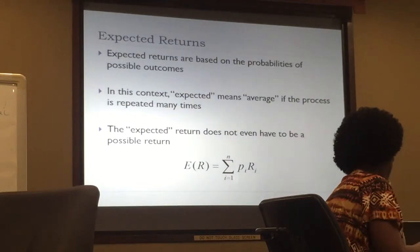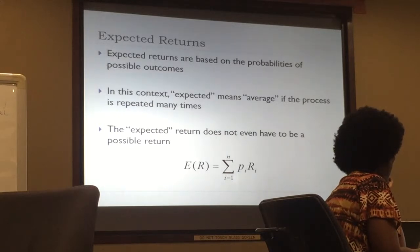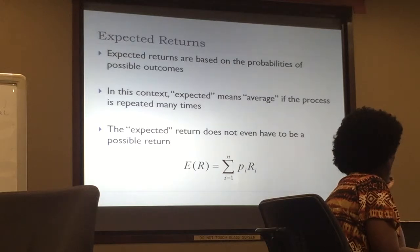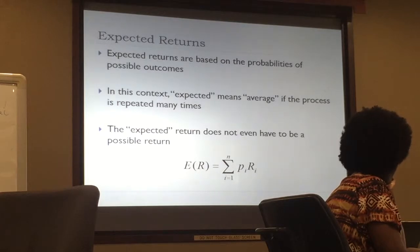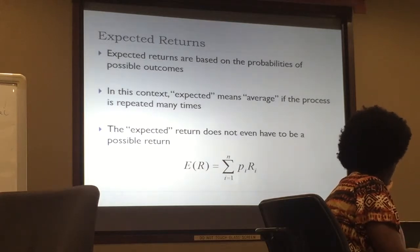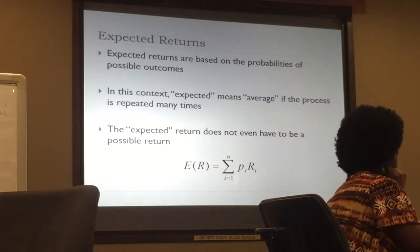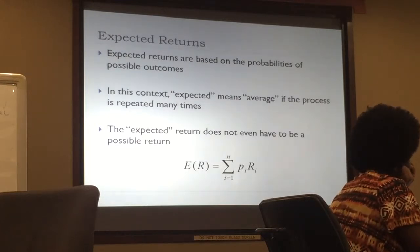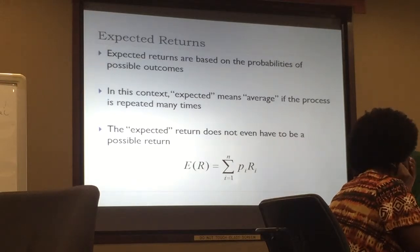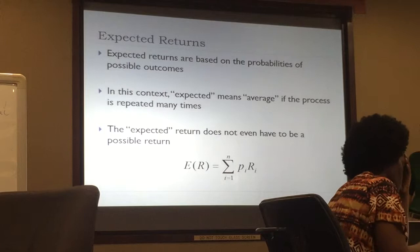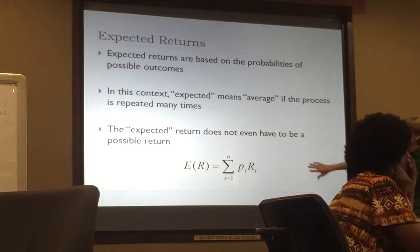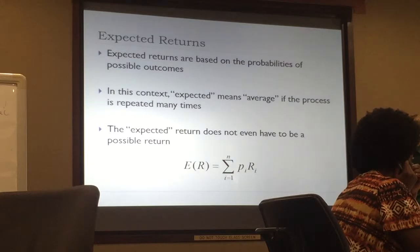We let the dice fall as they may, let whatever period go forward, and we see what happens — we'll have one outcome. But standing here before we know our outcome, our expectation is like an average if we were able to repeat the process many, many times. If we experience the next year 1,000 times, our expectation is on average what would likely happen, even though we know we're only going to have one of those possible outcomes. This is just a general expected value type of calculation.